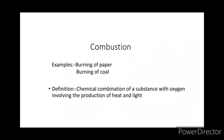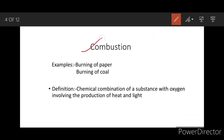Moving on to our first topic: Combustion. By taking these two examples — burning of paper and burning of coal — let me explain the process of combustion. In both examples, the substances are reacting with the oxygen present in the air to produce heat and light. From this, we can understand that the presence of oxygen is a must for combustion.